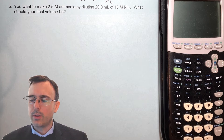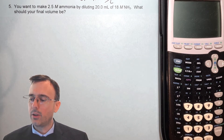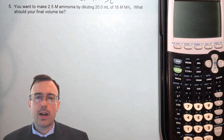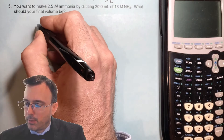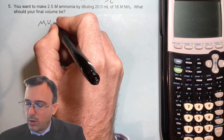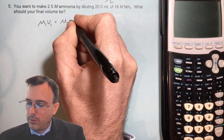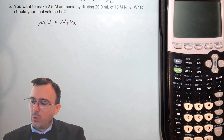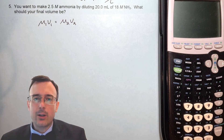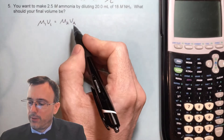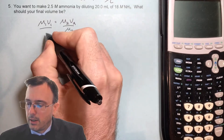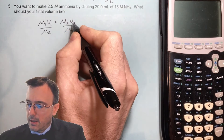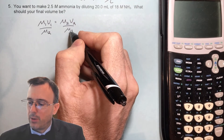Next problem: you want to make 2.5 molar ammonia by diluting 20 milliliters of 18 molar ammonia. What should your final volume be? This is a dilution problem, so we write M1V1 equals M2V2. We're solving for V2, which means we divide both sides of the equation by M2, so that M2 over M2 cancels.